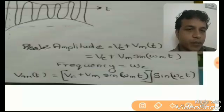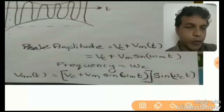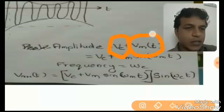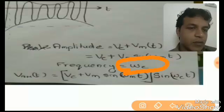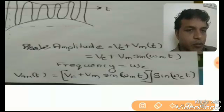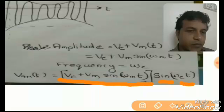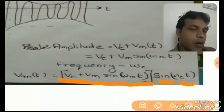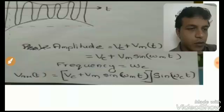So here is the representation of the amplitude, frequency, and equation of the amplitude modulated signal. The amplitude is Vc + Vm · sine(omega m · t), and the frequency is the same as that of the carrier signal, omega c. Using the general procedure of amplitude into sine of frequency, the equation of the amplitude modulated signal is: Vam(t) = (Vc + Vm · sine(omega m · t)) · sine(omega c · t).